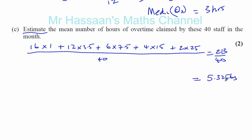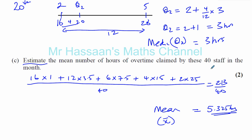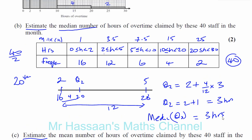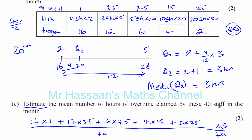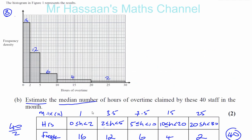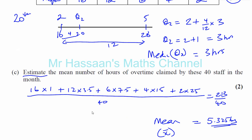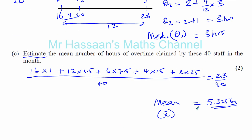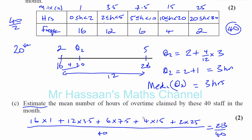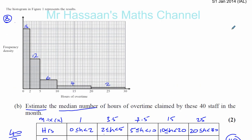That gives us 5.325 hours. That's the mean, given the symbol x-bar — that is the mean number of hours of overtime. We'll leave it as 5.325 because that's an exact value; it stopped there so we can leave it like that, unless they tell you otherwise. So that's how you find the median and the mean from this frequency table, which we derived from the answer for part A. We can always check: does it look sensible? The hours range from 0 to 30, so the answer must be within that range. And there we have the answer for part C of this question. Thank you for watching.